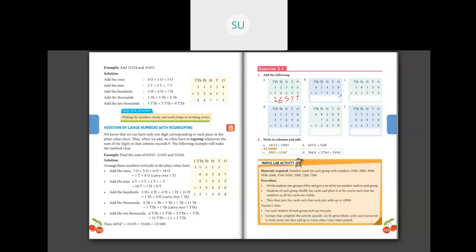Next problem: 8 plus 1 is 9, 5 plus 3 is 8, 4 plus 3 is 7, 7 plus 1 is 8, and 4 plus 2 is 6. So the answer is 68,789. Then the next one: 8 plus 3 is 11, so we carry over 1. Then 7 plus 2 is 9 plus 1 is 10, so we write 0 and carry 1. Then 5 plus 3 is 8 plus 1 is 9. Then 8 plus 1 is 9 and 3 plus 4 is 7. So the answer is 79,901.